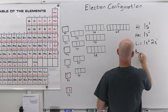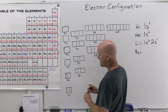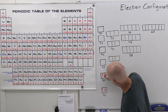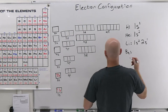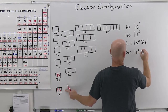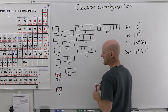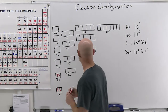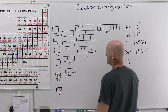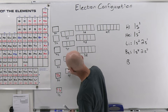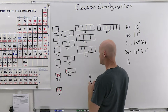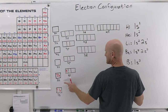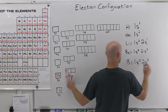Beryllium has a fourth electron, which also goes in the 2s orbital with the opposite spin, giving us 1s² 2s². Then boron adds one more electron, now going into the 2p, giving 1s² 2s² 2p¹. We just keep working our way down the periodic table as we continue adding electrons.